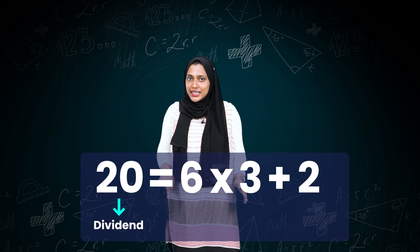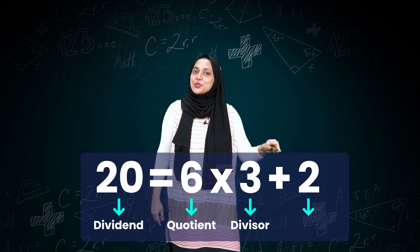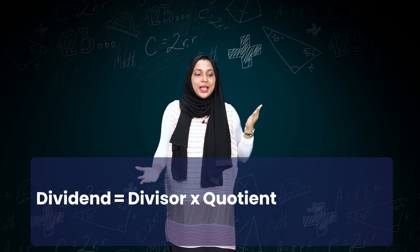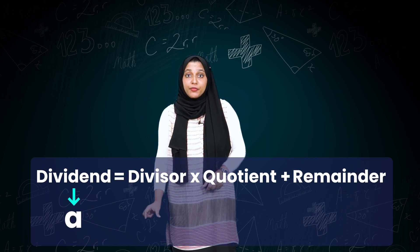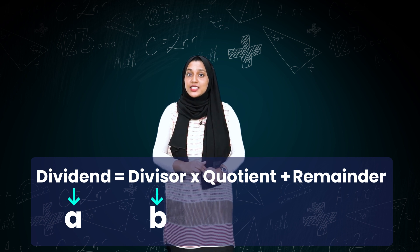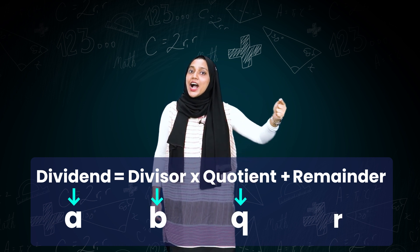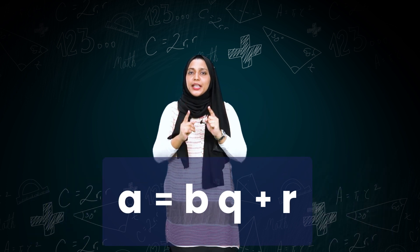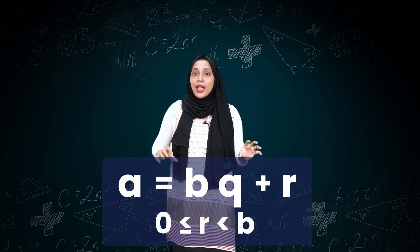Where 20 is dividend, 3 is divisor, 6 is quotient, and 2 is remainder. In general, it can be written as: dividend equal to divisor into quotient plus remainder. If we replace A in place of dividend, B in place of divisor, Q in place of quotient, and R in place of remainder, then we get A equal to BQ plus R, where R lies between 0 and B.